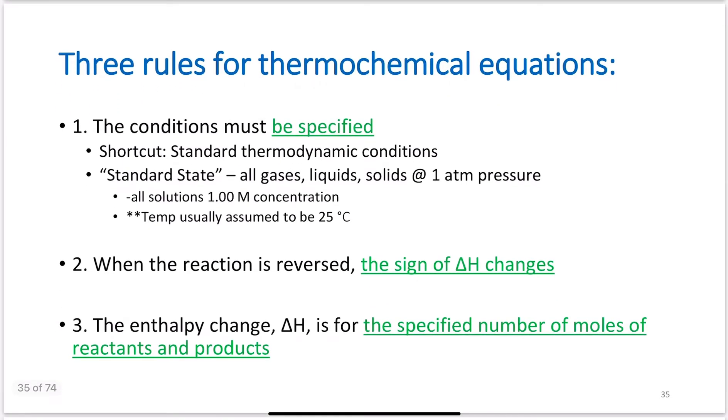Three rules for thermochemical equations. Number one, your conditions must be specified. The shortcut is standard thermodynamic conditions, or standard state. That's why we write the delta H not Rxn. This not symbol means standard conditions. This little Rxn, this is helping me know that it's standard enthalpy of reaction. We could have delta H for formation, dissolution. There's all kinds of different things that we can do. This Rxn means reaction.